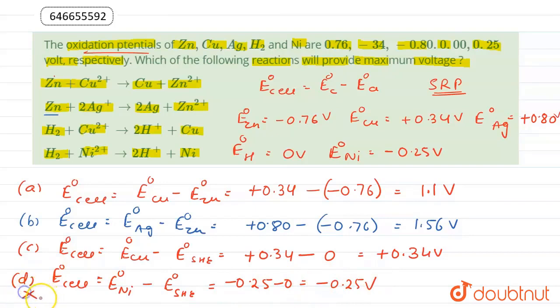This reaction is not possible because here we are getting E°cell negative. If E°cell is negative, then the reaction is non-spontaneous or not possible. So according to this explanation, we have maximum value for voltage in the second reaction. The correct option is (b).